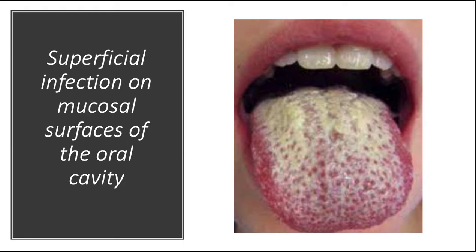Candidiasis can involve the mucous membranes, skin and deep organs. The most common presentation is superficial infection on mucosal surfaces of the oral cavity, where florid proliferation of the fungi creates grey-white dirty-looking pseudomembranes composed of matted organisms, inflammatory cells and tissue debris. Thrush is seen in newborns, debilitated patients, children receiving oral corticosteroids for asthma, and after a course of broad-spectrum antibiotics that destroy competing normal bacterial flora.